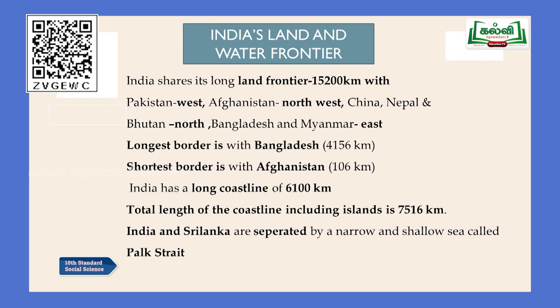India has a long coastline of 6,100 kilometers which includes three important water bodies: Bay of Bengal in the east, Arabian Sea in the west, and Indian Ocean in the south. The total length of the coastline including islands is 7,516 kilometers. India and Sri Lanka are separated by a narrow and shallow sea called Palk Strait - this is a very important question.